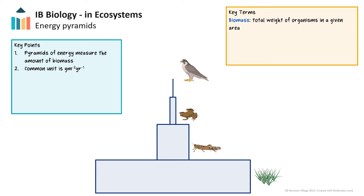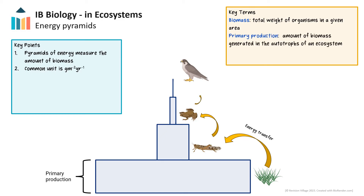Moving up to the next trophic level in the pyramid, the second level is significantly smaller — these are the primary consumers that feed on the producers. The energy transfer is shown here with yellow arrows. Primary production is the amount of biomass produced by autotrophs through photosynthesis and other metabolic reactions. Primary production is limited by factors like light intensity, temperature, pH, humidity, soil nutrients, and water availability.